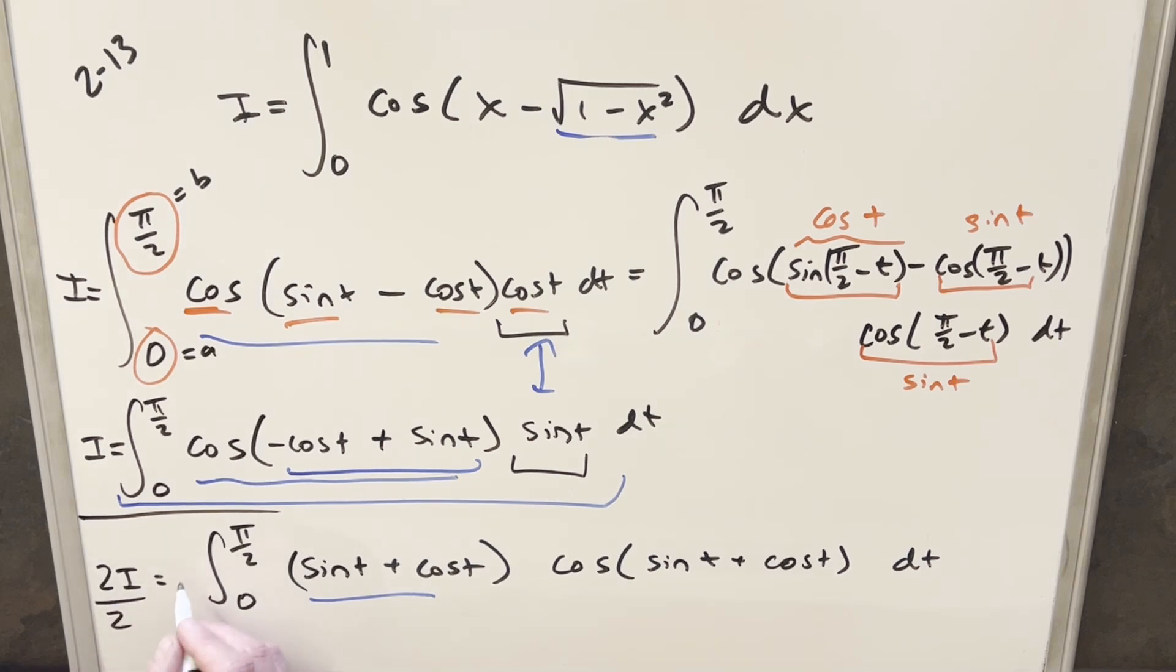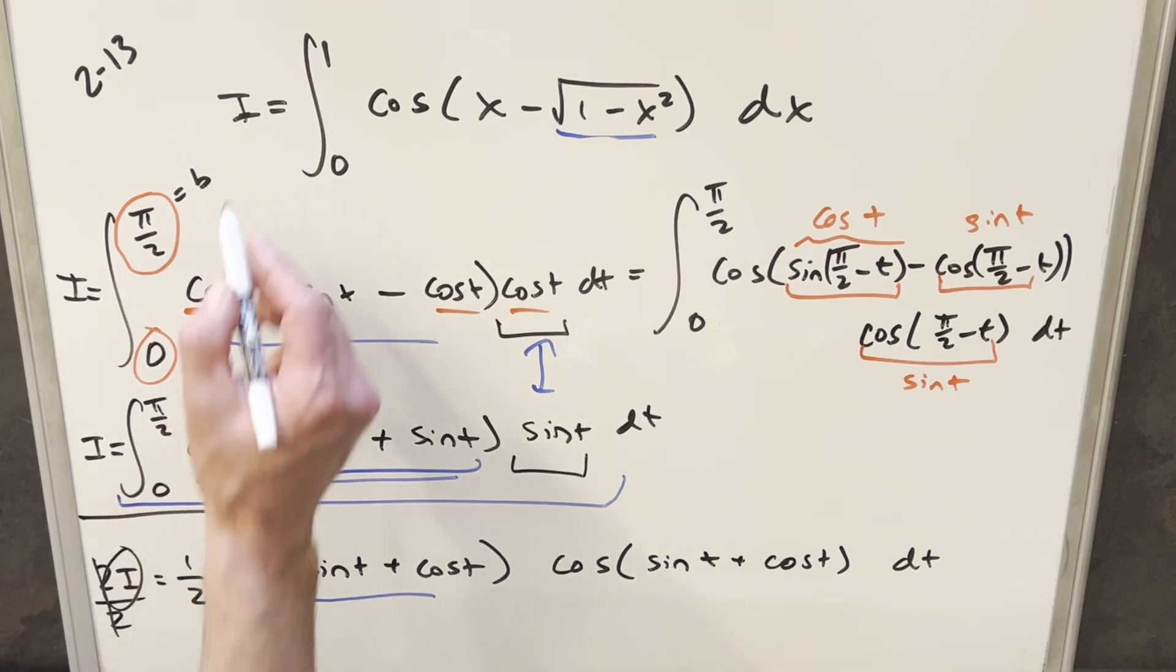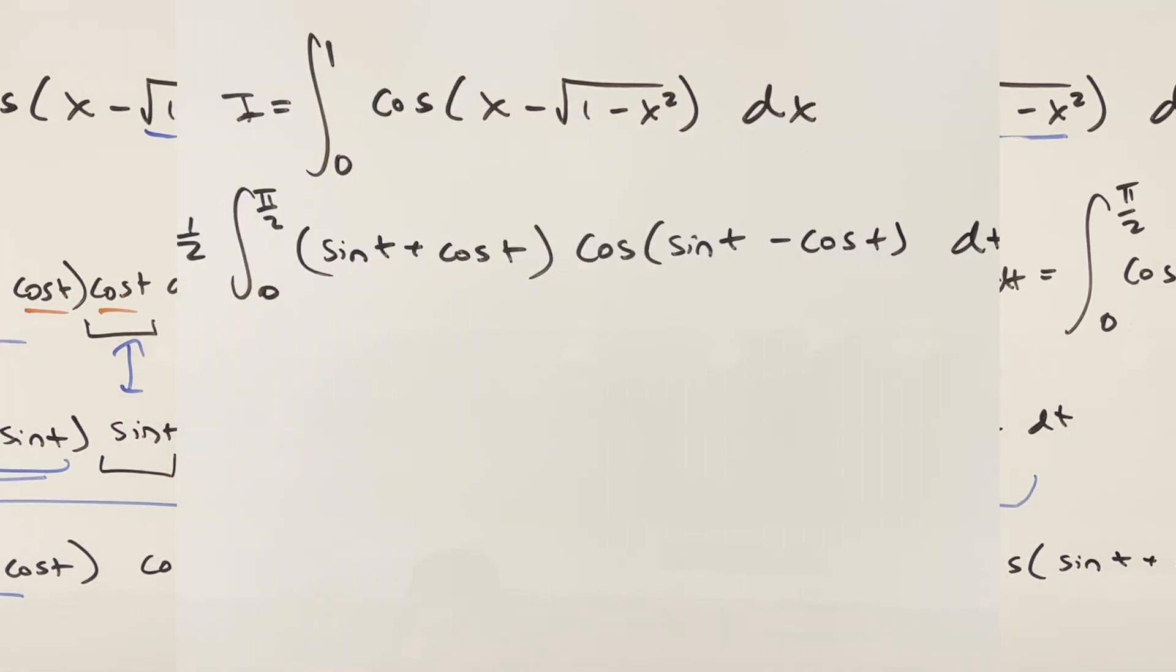And one other thing, let's just get rid of the 2 here, so I can divide by 2 on this side, and I can multiply by a half over here, just so I can isolate our goal, the original integral you want to find.